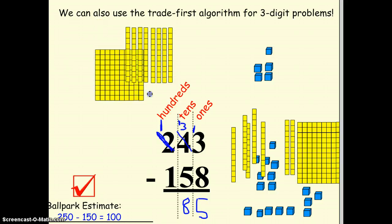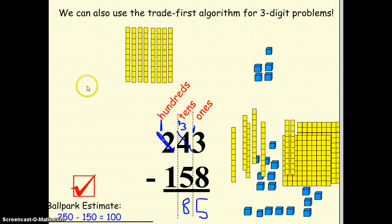And then the last thing I need to do is take away 100, leaving me with 0 hundreds. And I can show that down here. I can leave it blank, but if I want to, I could put a 0. And so my answer is 85, close to my estimate of 85.